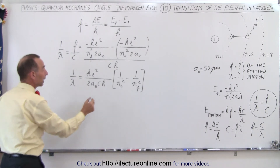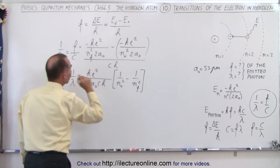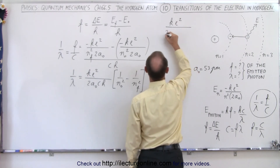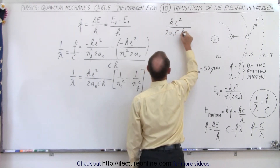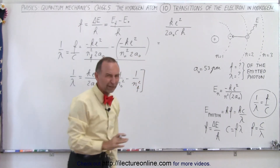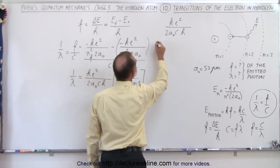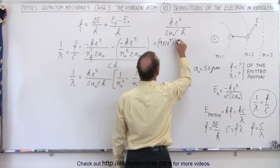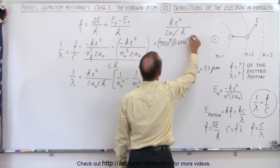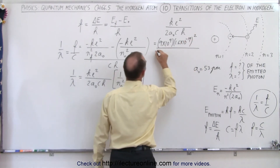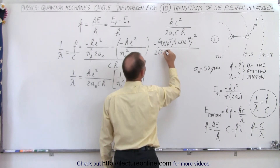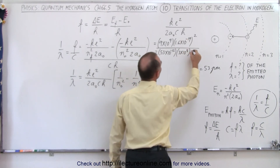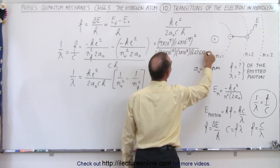Now let's take a look at this constant: k e squared divided by 2a sub nought times c times h, and plug in the numbers. k is 9 times 10 to the ninth, e is 1.6 times 10 to the minus 19 — squared — divided by 2 times the Bohr radius of 53 picometers, which is 53 times 10 to the minus 12, c is 3 times 10 to the 8, and h is 6.626 times 10 to the minus 34.